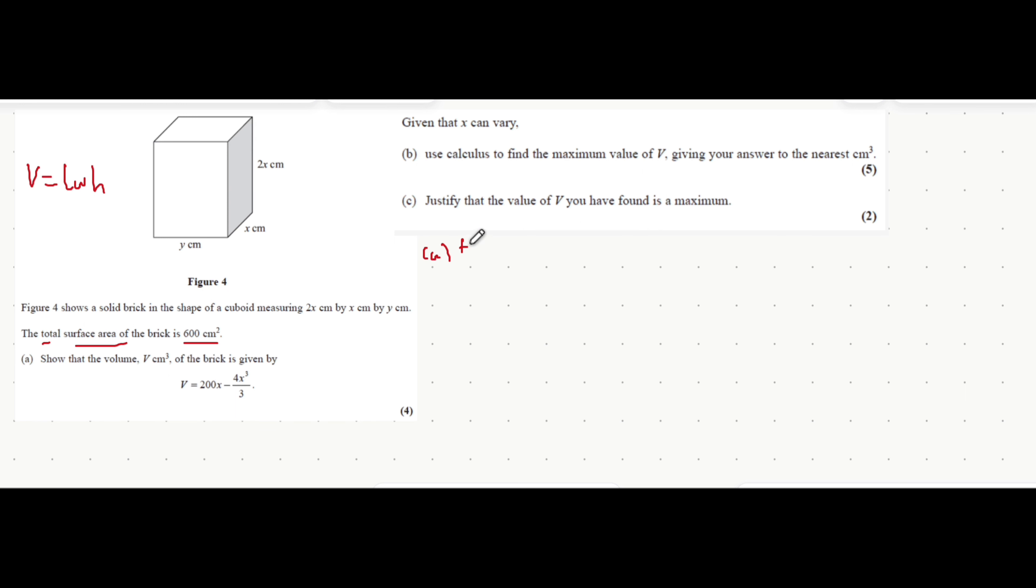Let's do the front first. The front is a rectangle. Its area is given by length multiplied by the height of the rectangle which is y times 2x, so that's 2xy. That's also the same as the back of the cuboid. We can take into account the back as well by adding 2xy to itself to get 4xy.